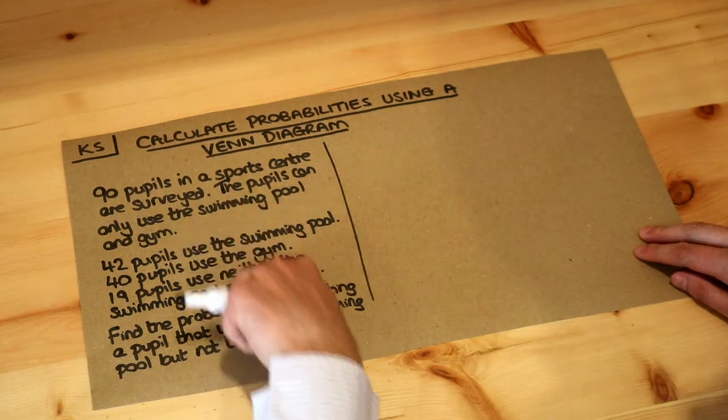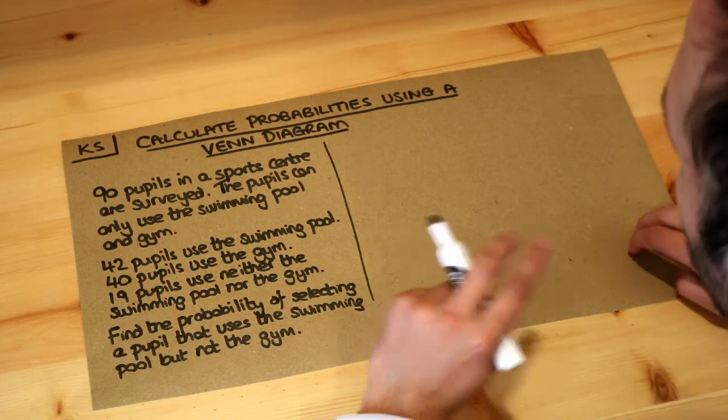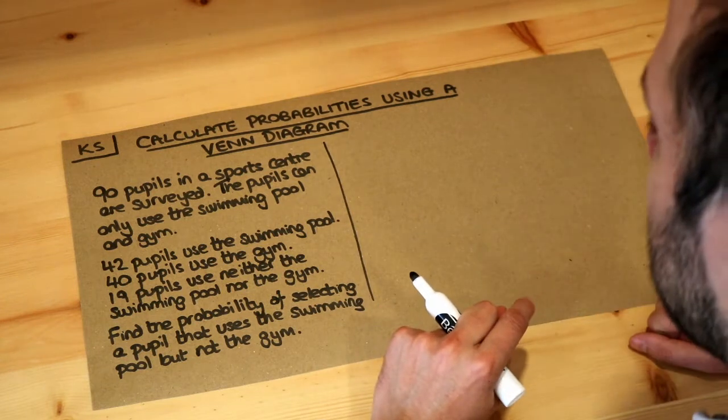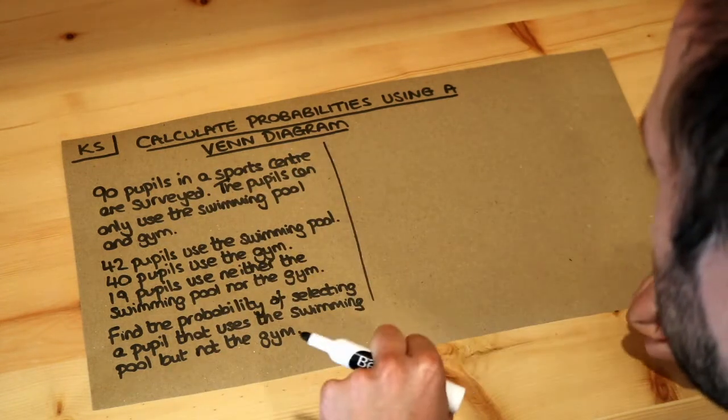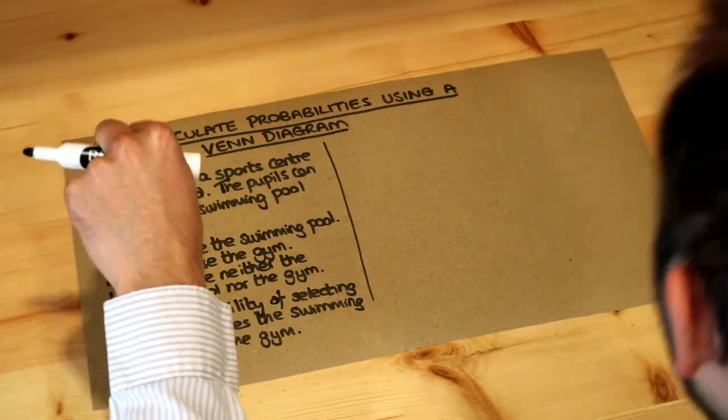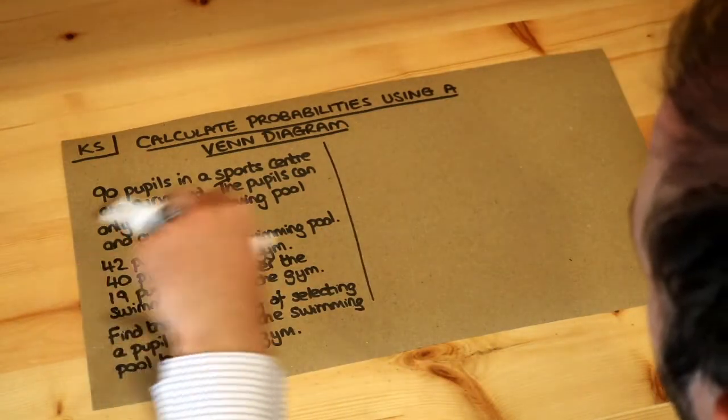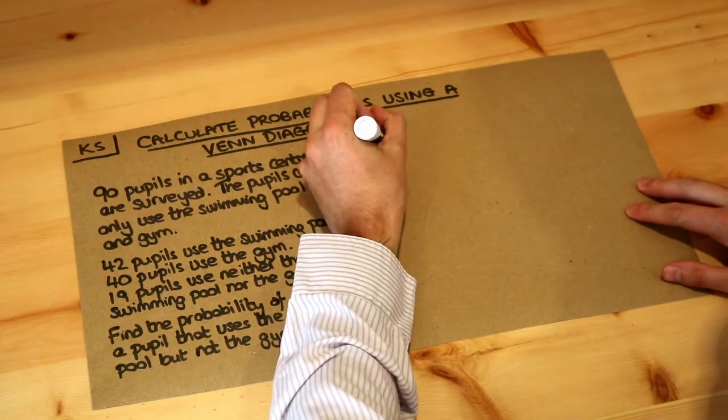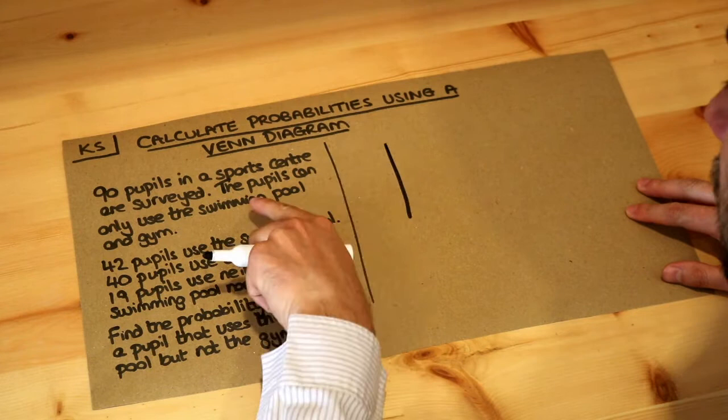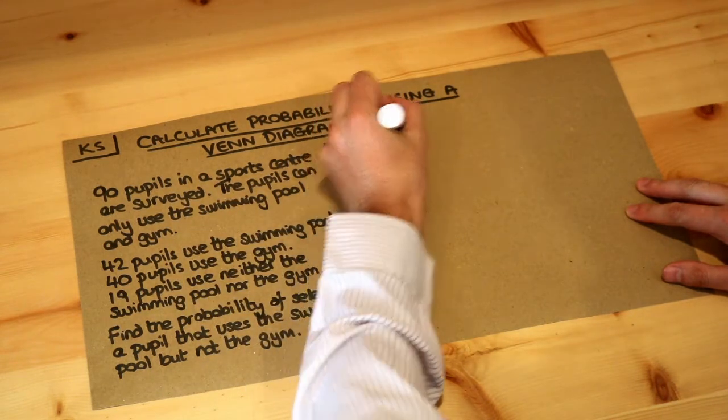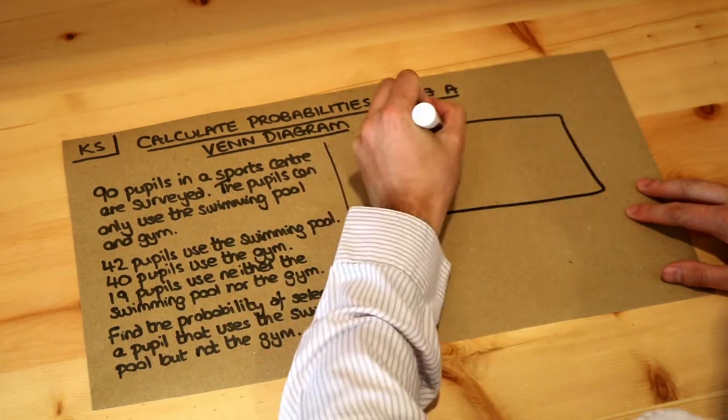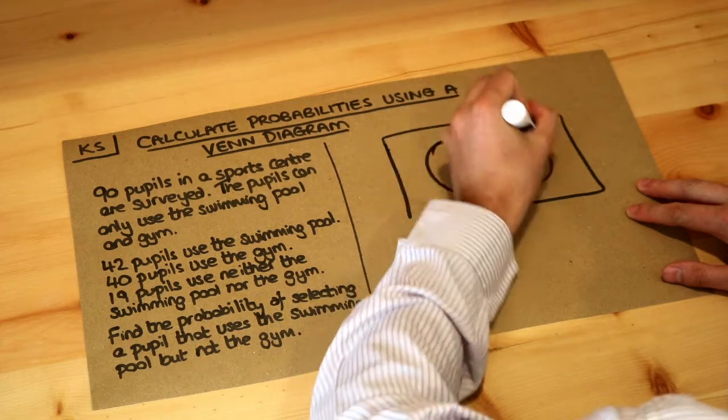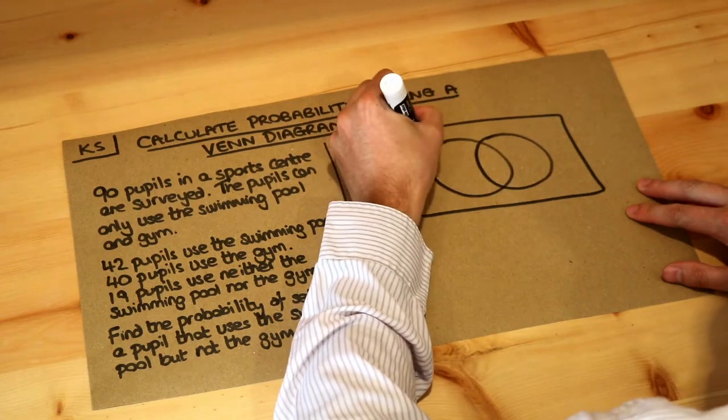So let's draw a Venn diagram for this information. We use a Venn diagram because we're combining different groups of people. We've got people that use the swimming pool, use a gym, or both or neither. When we combine things where people can do both or neither, that's when we use a Venn diagram. Because we've got two things, swimming pool and gym, we have two circles which overlap. So we've got swimming pool and gym.